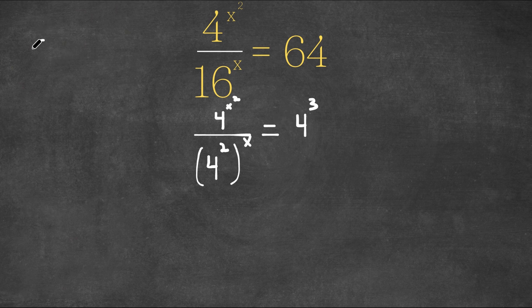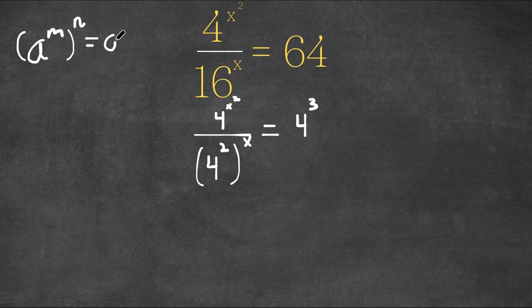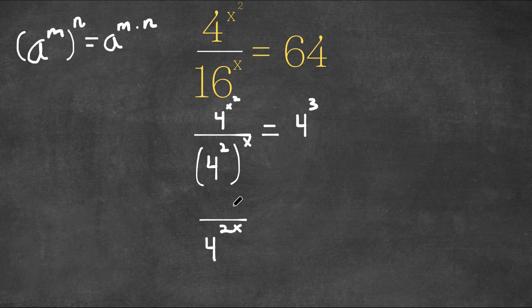So now if we have something in the form a to the power of m to the power of n, this is actually the same thing as a to the power of m times n. Meaning 4 to the power of 2 to the power of x, this is the same thing as 4 to the power of 2 times x, or also known as 4 to the power of 2x. And our numerator is 4 to the power of x squared still.